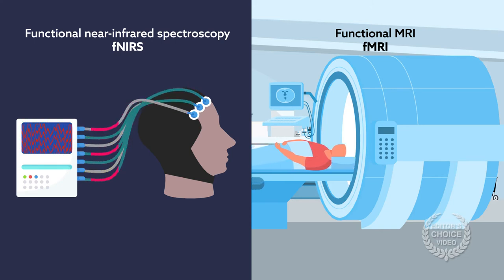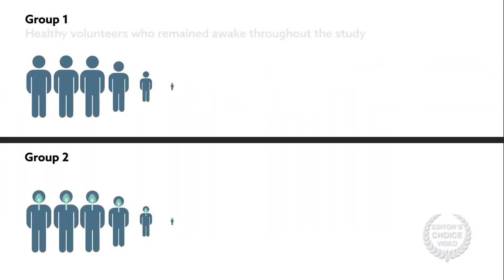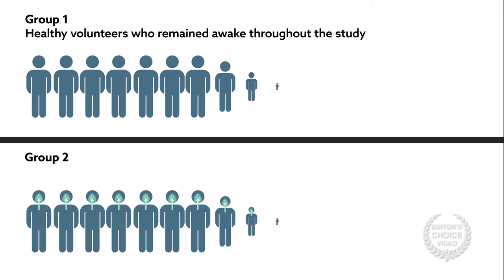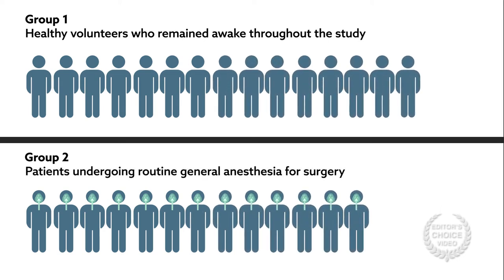But whereas fMRI restricts patient position and motion, F-NIRS is portable and can be applied more easily during surgery. Researchers tested F-NIRS on two groups of patients: healthy volunteers who remained awake throughout the study, and patients undergoing routine general anesthesia for surgery.